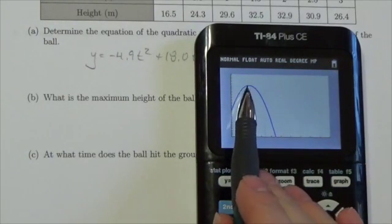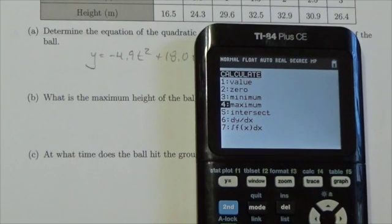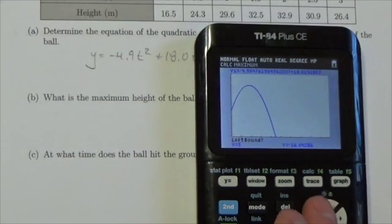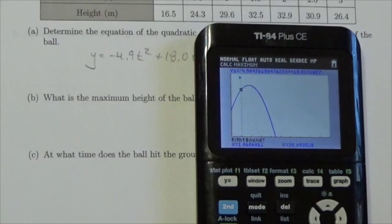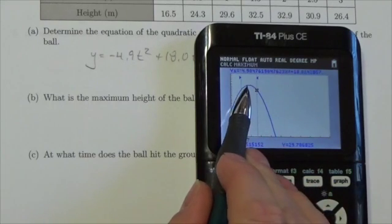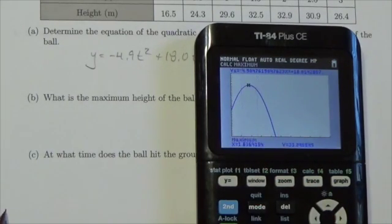So now I'm looking for the maximum height there. So I will press second calc to get into this menu. I'll choose maximum. And now I'm going to bring the cursor over. I've got to move to the left of my maximum, press enter. Move to the right of my maximum, press enter. And I want to make sure that that maximum is in between these two triangles. I just press enter to get past the guess.